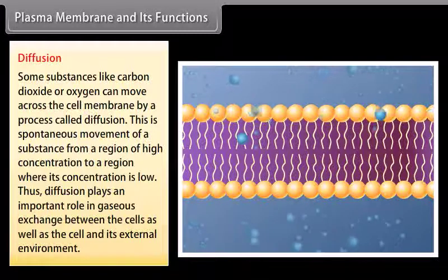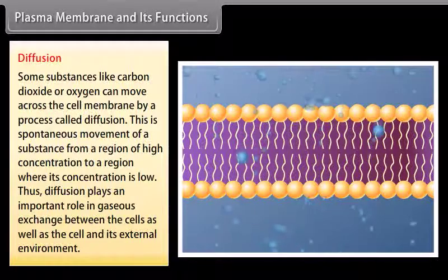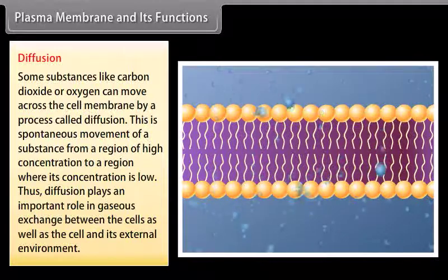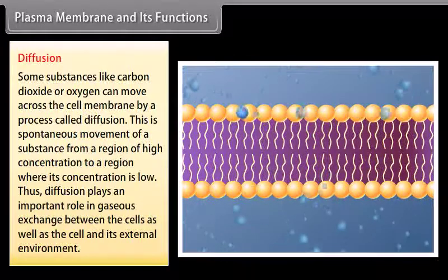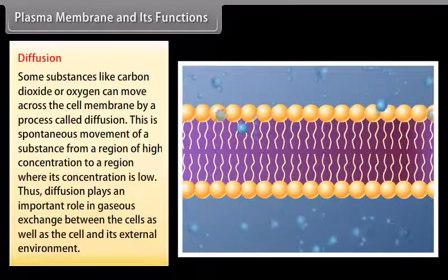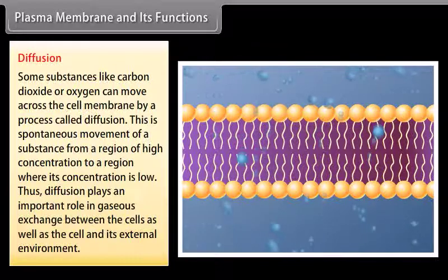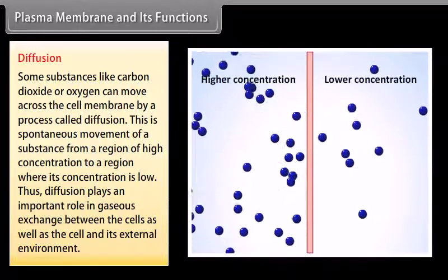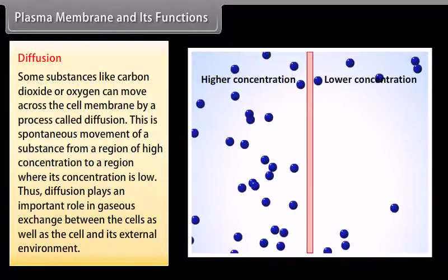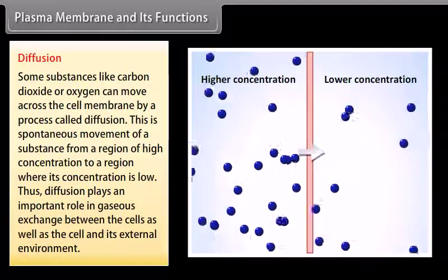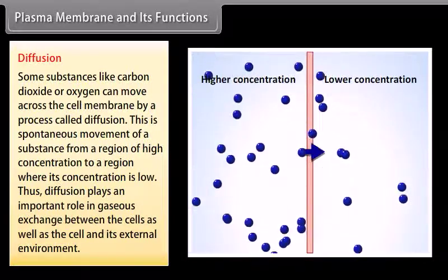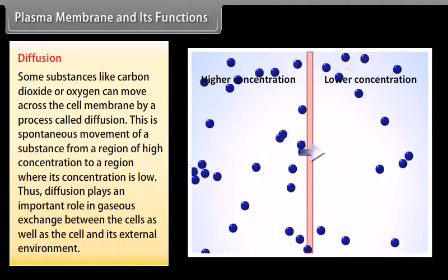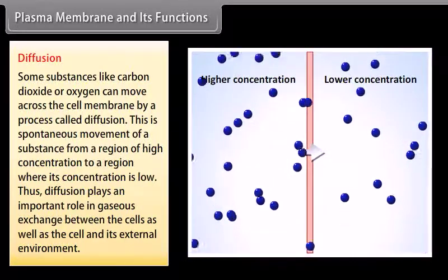Some substances like carbon dioxide or oxygen can move across the cell membrane by a process called diffusion. Diffusion is the spontaneous movement of a substance from a region of high concentration to a region where its concentration is low. Diffusion plays an important role in gaseous exchange between cells as well as between the cell and its external environment.